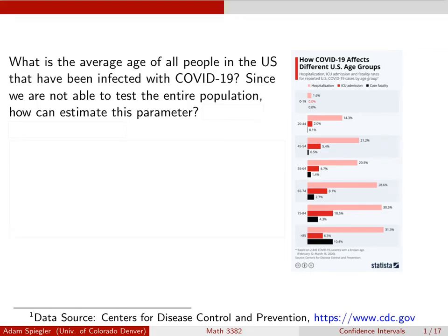Hi everyone. In this video we're going to begin looking at material in Chapter 7, which deals with confidence intervals. We've seen confidence intervals earlier, particularly when we were doing bootstrapping, and they helped us give interval estimates for unknown values of population parameters. We're going to take a similar look at material that will help us construct interval estimates for population parameters without doing the bootstrapping we've seen before.